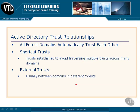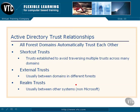An external trust is if we have domains in different forests, and these forests aren't connected in any way, but we need to connect two of the domains — we can set an external trust. A realm trust is between other non-Microsoft systems that are running Kerberos. If you've got a Microsoft Active Directory system trying to trade authentication with someone who's non-Microsoft but running Kerberos, you can do a realm trust.